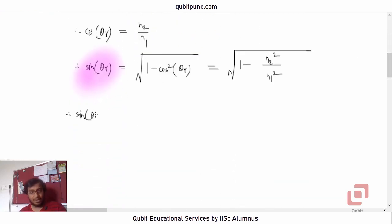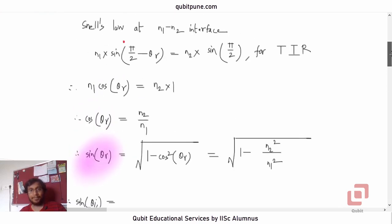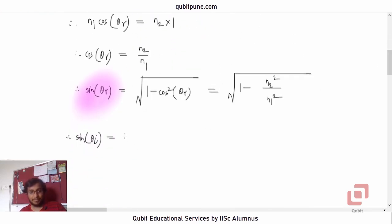Therefore sine of theta_i equals we have got this n1 already into sine theta_r. Let's take the LCM so that will be n1 squared minus n2 squared upon n2 squared under the root, so when it comes out it will become n1.